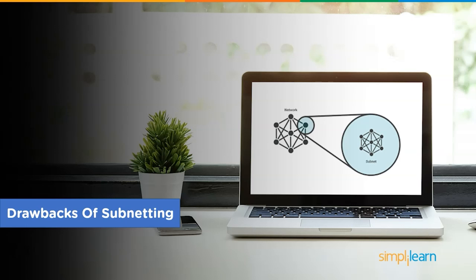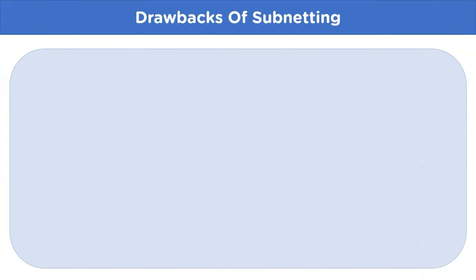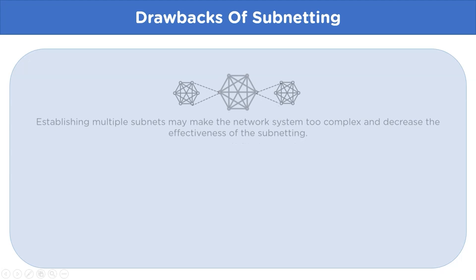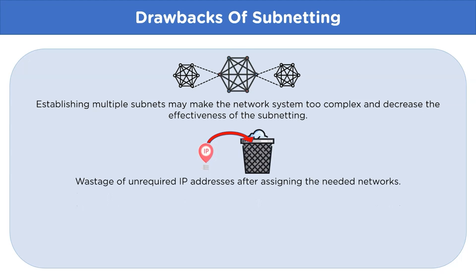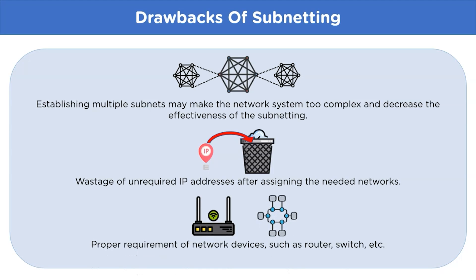Let's move on to the drawbacks of using subnetting. The first drawback is that it makes the network model much more complex, which in turn affects maintenance and efficiency. Then we have unused IP addresses left over from applying the subnetting process. And lastly, low-efficiency hardware devices — if routers or switches used are of low efficiency, the performance of the subnetwork is also decreased.